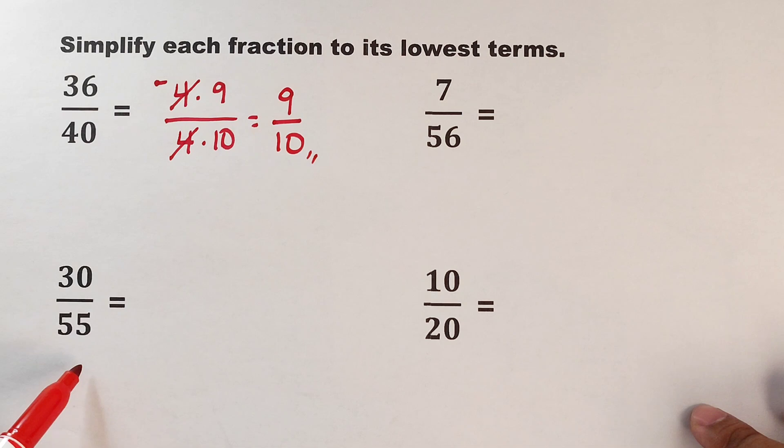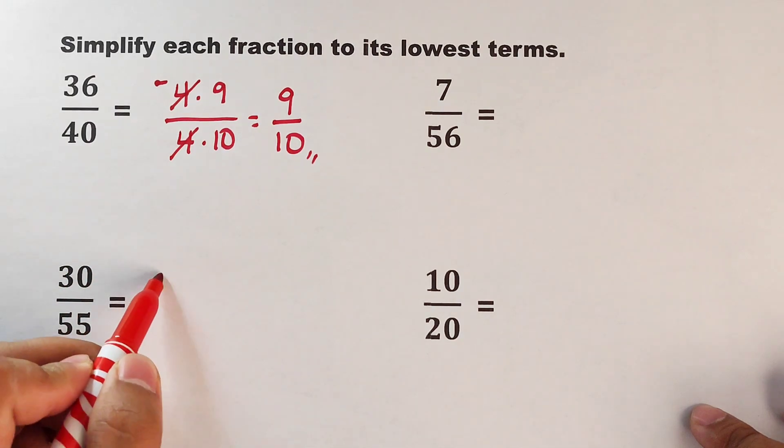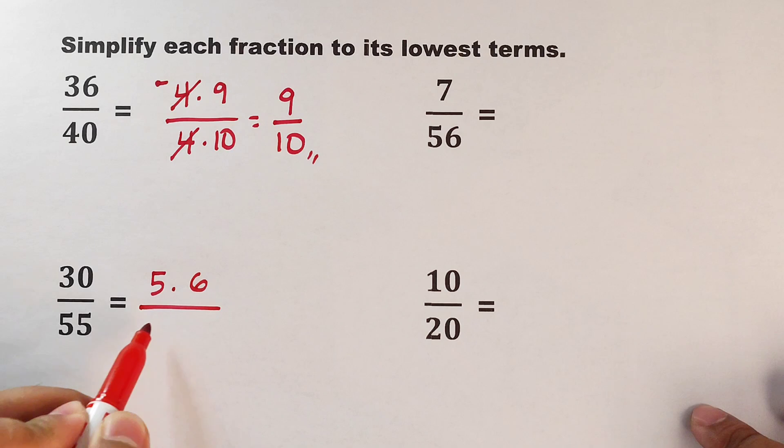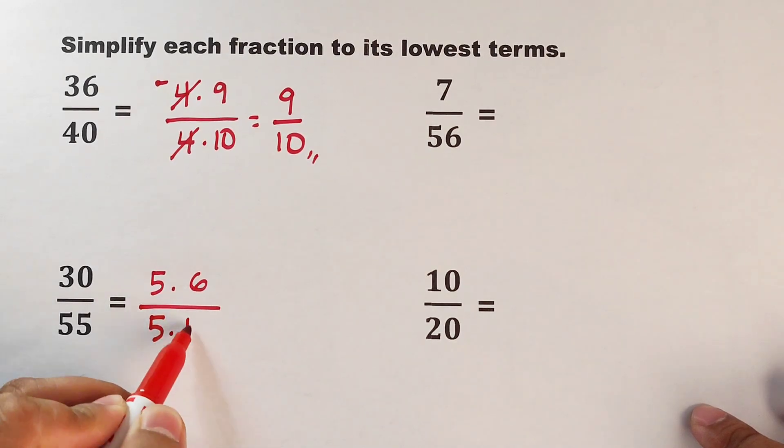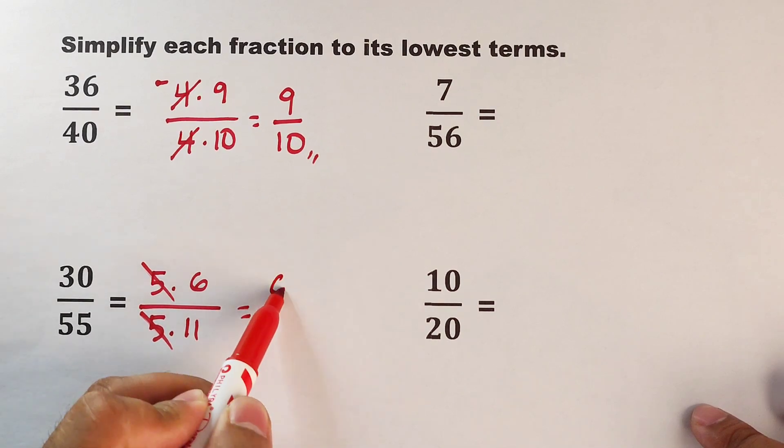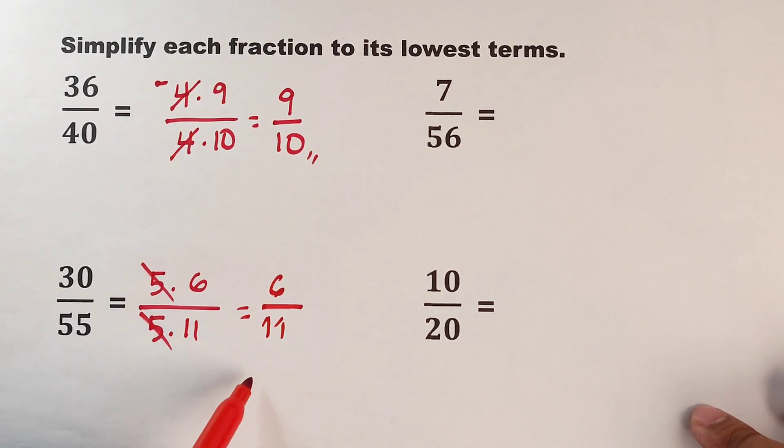Next, we have 30 over 55. For 30 over 55, the common factor or the least common multiple is 5. We can express 30 as 5 times 6, while 55 can be expressed as 5 times 11. You can cancel 5 and 5. This is 6 over 11.